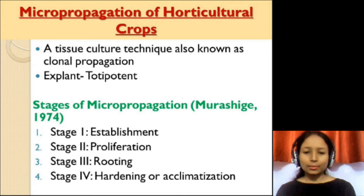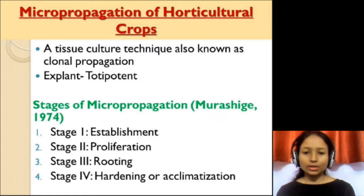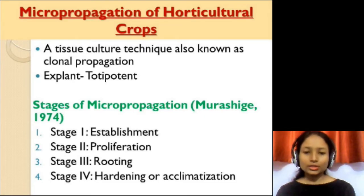Micro-propagation is basically a tissue culture technique which is used as an asexual mode of reproduction in plants. In micro-propagation, a minute size plant cell or tissue is taken and it is grown in a culture medium under sterilized conditions to produce plants in numerous quantities. Micro-propagation can also be said as a mode of clonal propagation because all the plants produced through this method are clones of their parents, as they are identical to the parents.